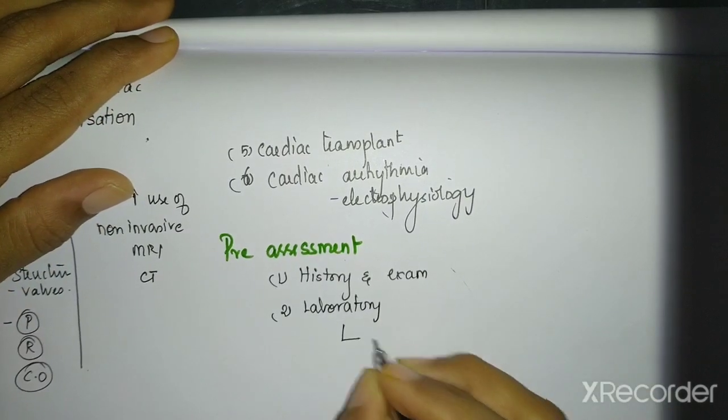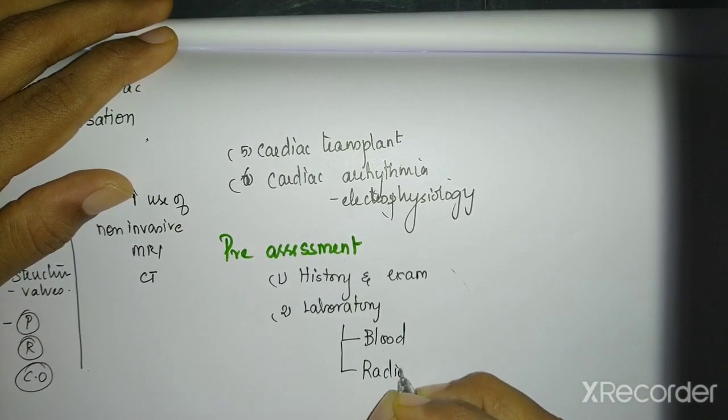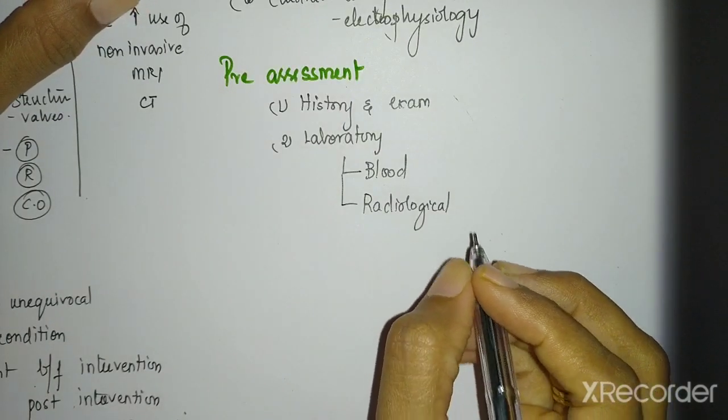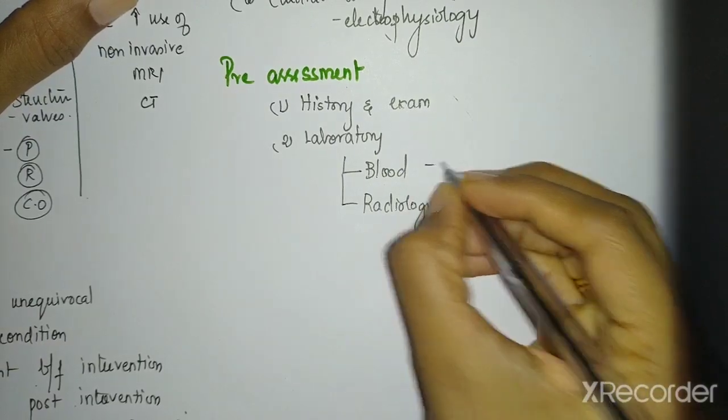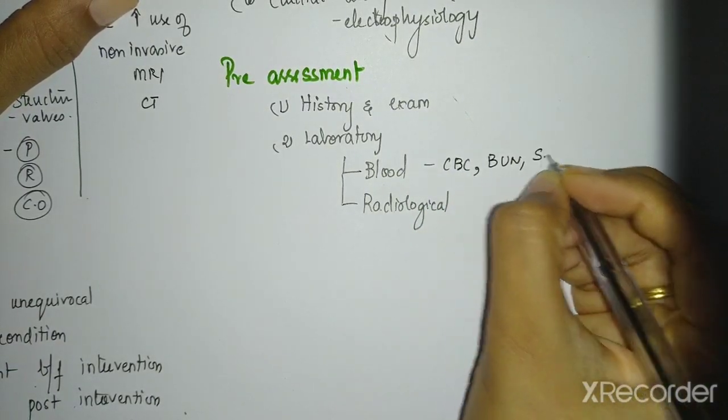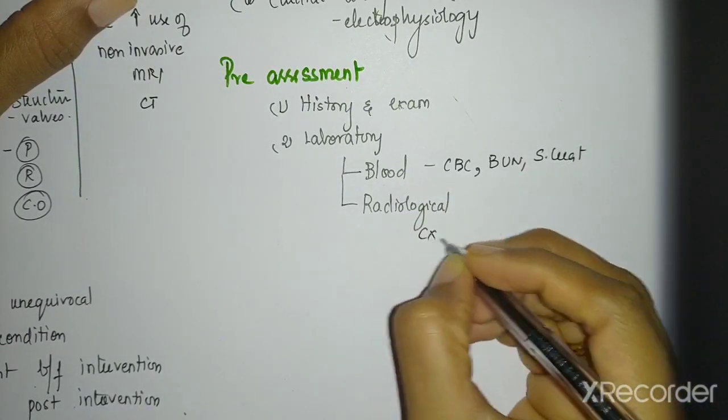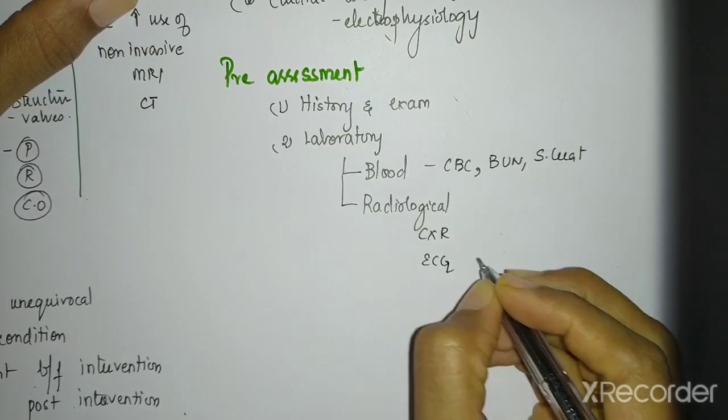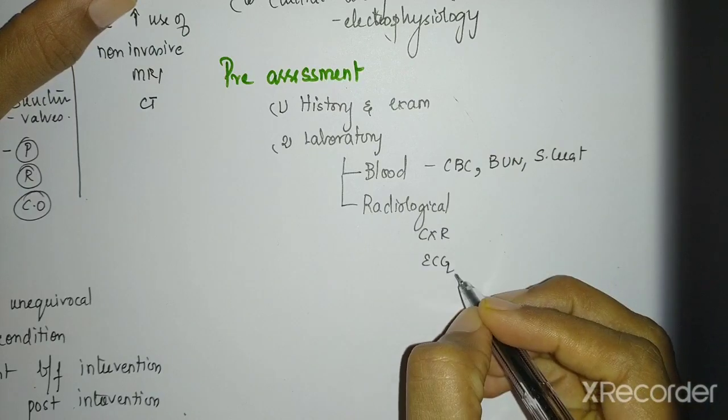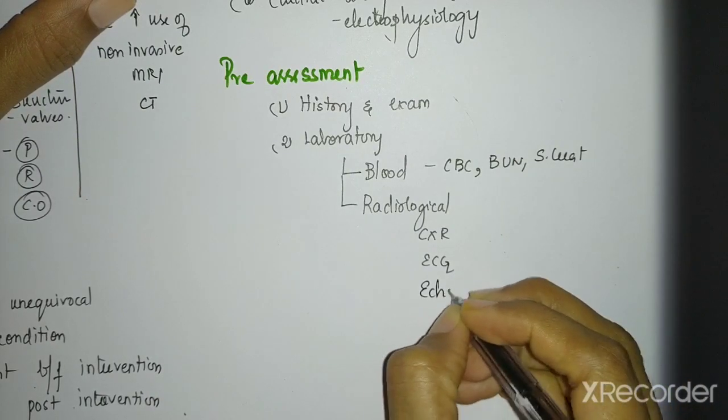Laboratory assessment can be your blood work and your radiological investigation. Similar to your pre-op assessment. This is like a minor procedure. So you will look for your regular anemias. If you are going to give contrast, you need to know if the kidney status is functioning well. So at least these things you will do. And chest x-ray, ECG to look for any arrhythmias. Chest x-ray to look for the silhouette of the cardia. All of these are important before you actually introduce a catheter inside. And echo, of course.